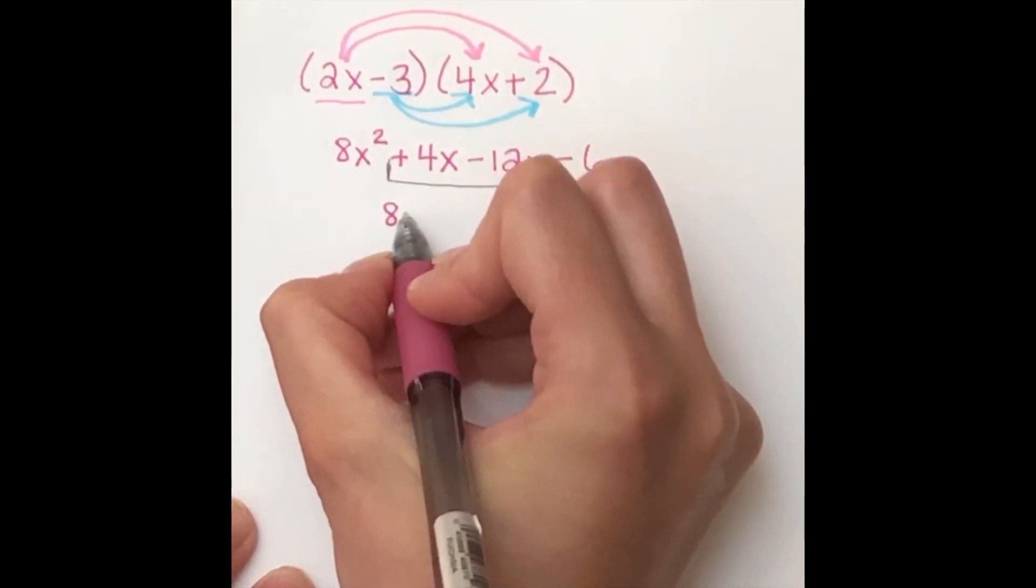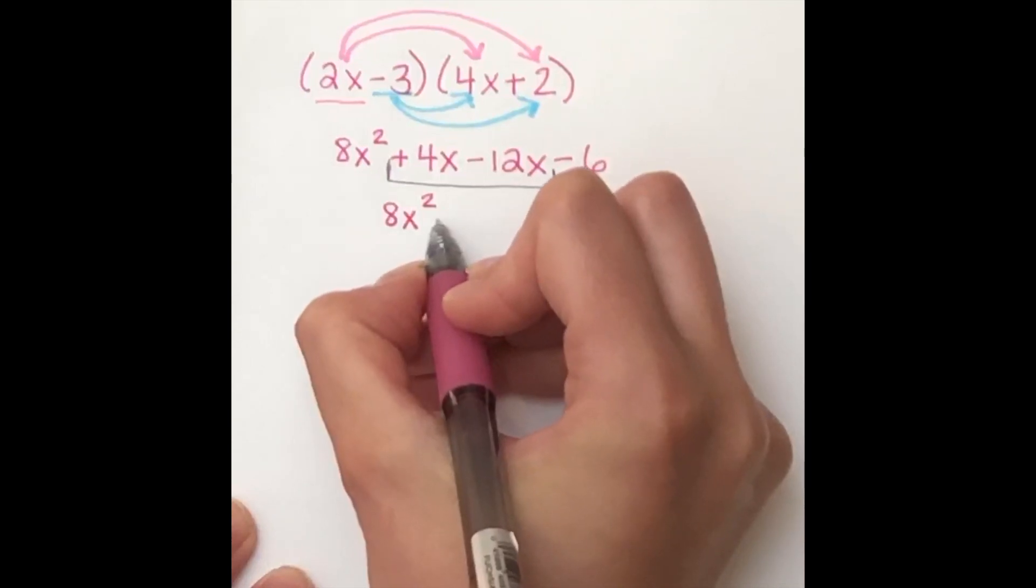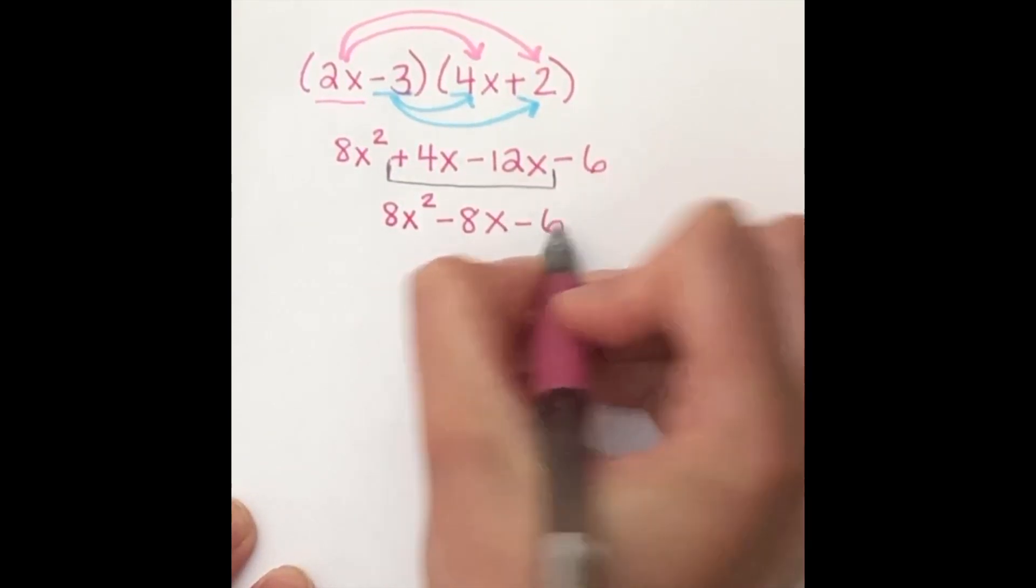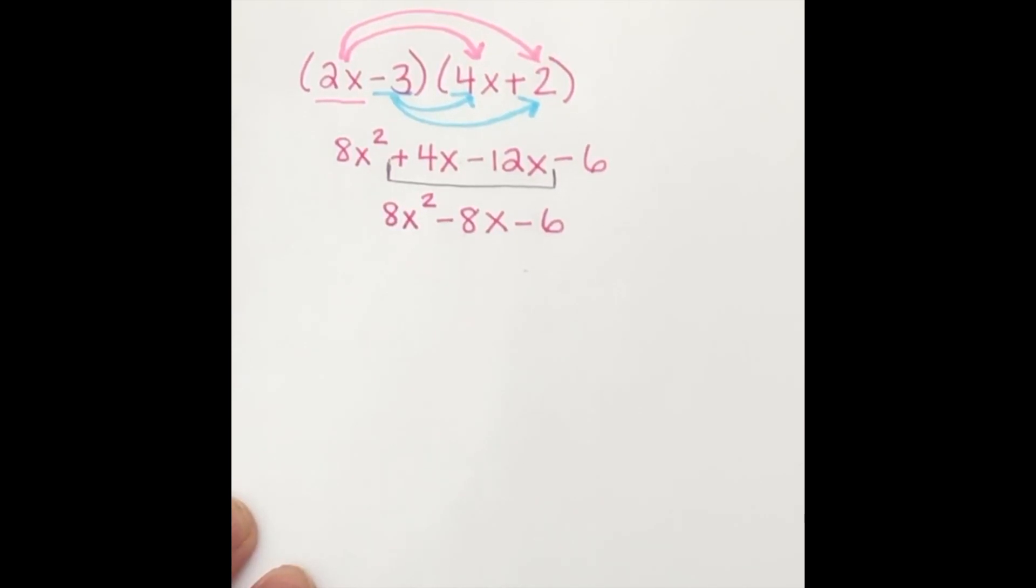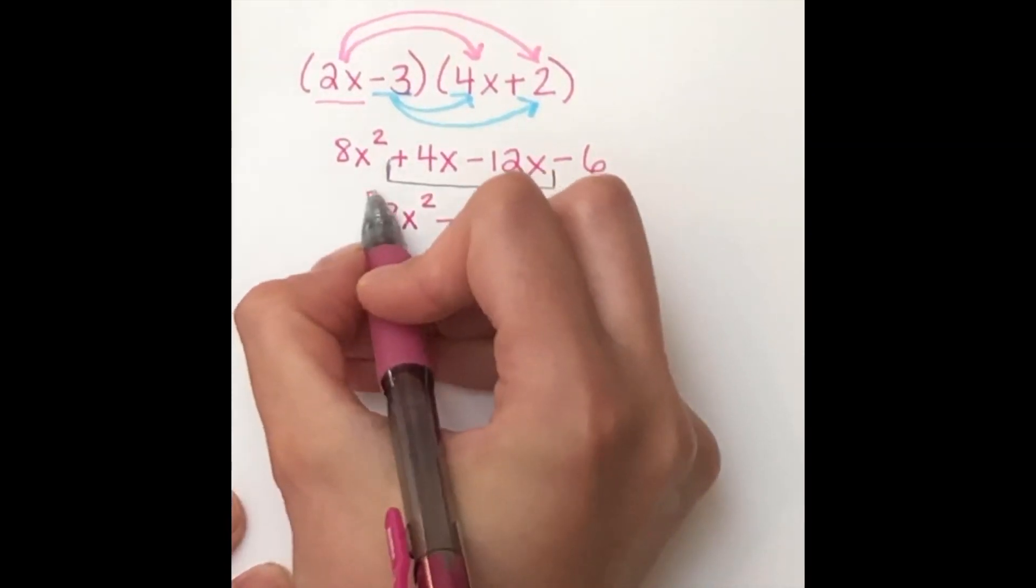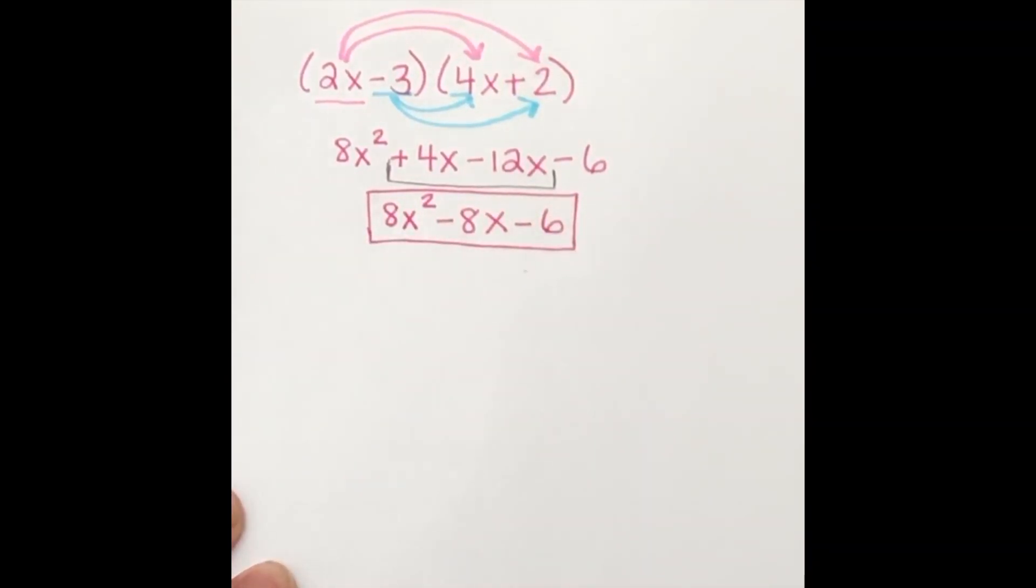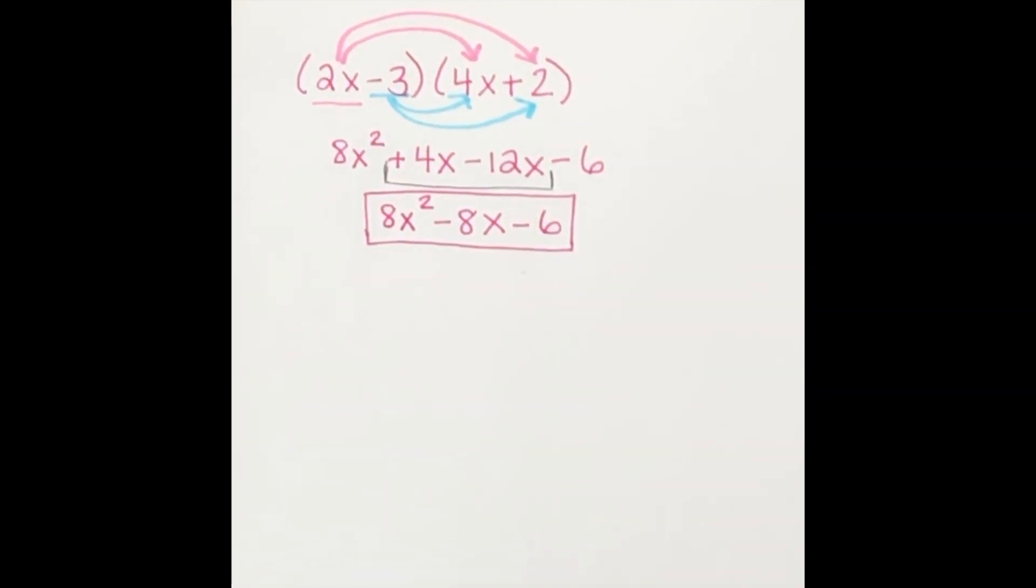So we have 8x squared minus 8x minus 6. And we're going to look at this and make sure that there are no further like terms that we can combine, which there aren't. We're also going to check to make sure that it's written in standard form, which it is. So we are all set. 8x squared minus 8x minus 6 is our final answer.